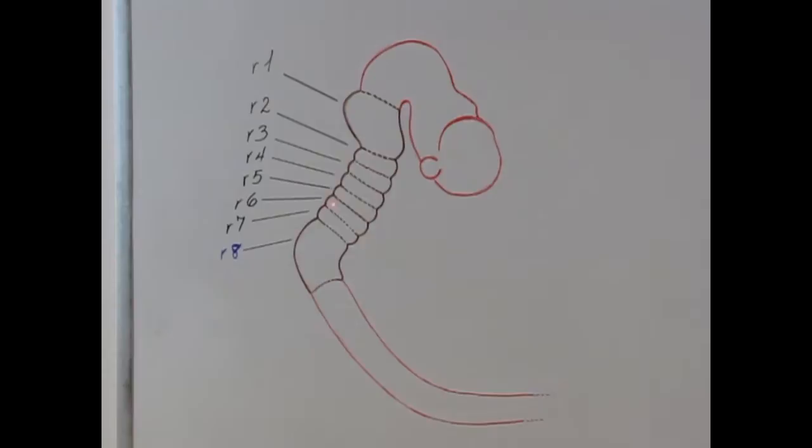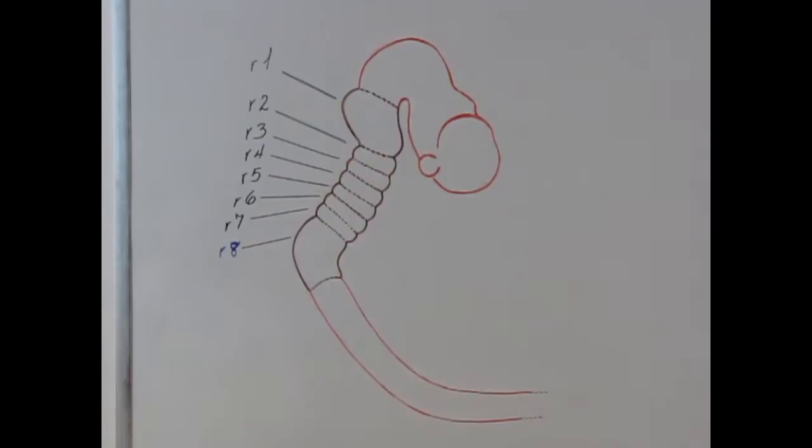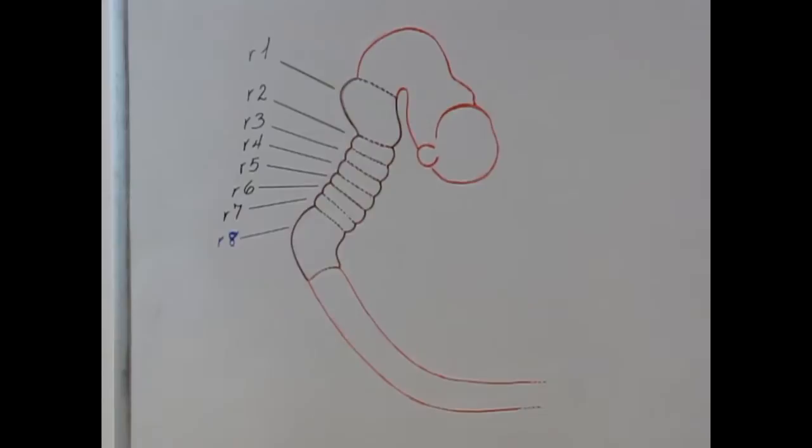This type of segmentation subdivides certain regions — like the rhombencephalus — into eight segments. These segments are named neuromeres.